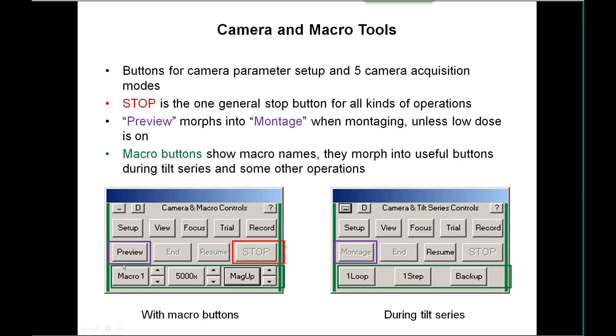You can dial up which one is shown here, or you can have a toolbar that shows them all. If there's a name defined in the macro, it will show up in the button. These buttons get hijacked and turned into other things during tilt series and a few other operations.